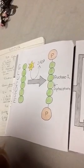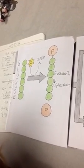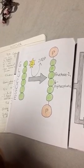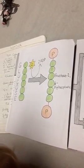The net result of glycolysis is two molecules of ATP, two molecules of pyruvic acid, two molecules of water, and two molecules of NADH.